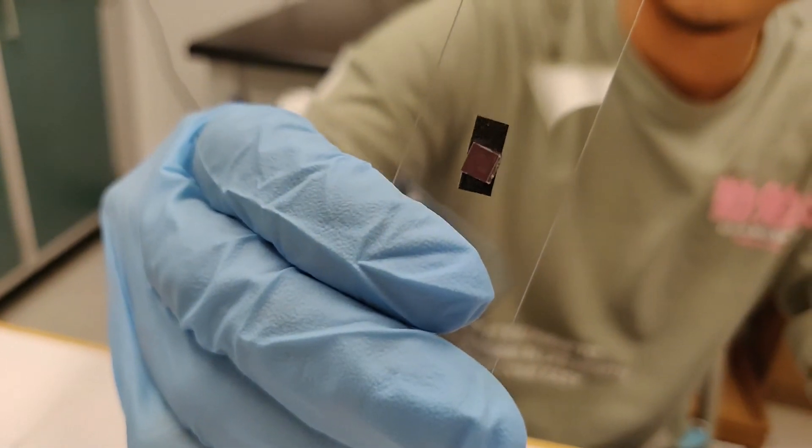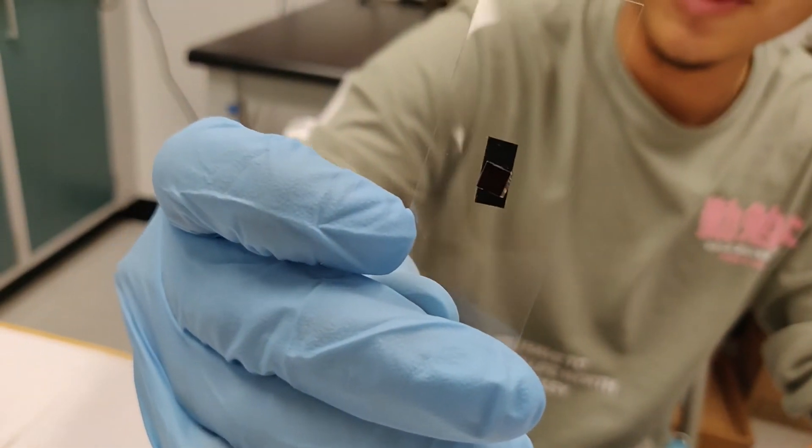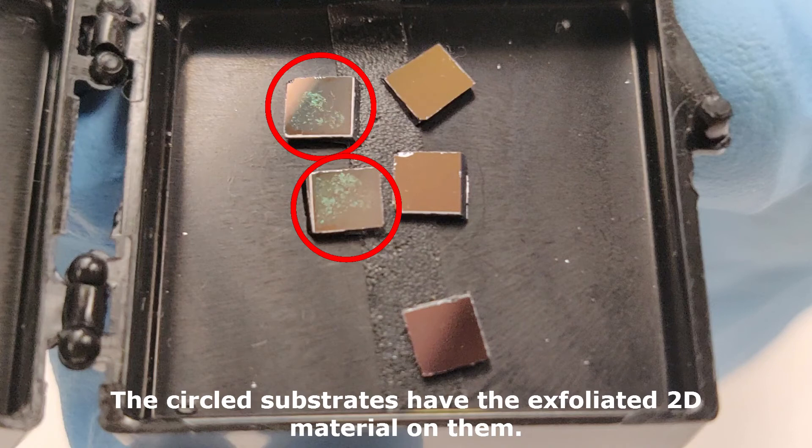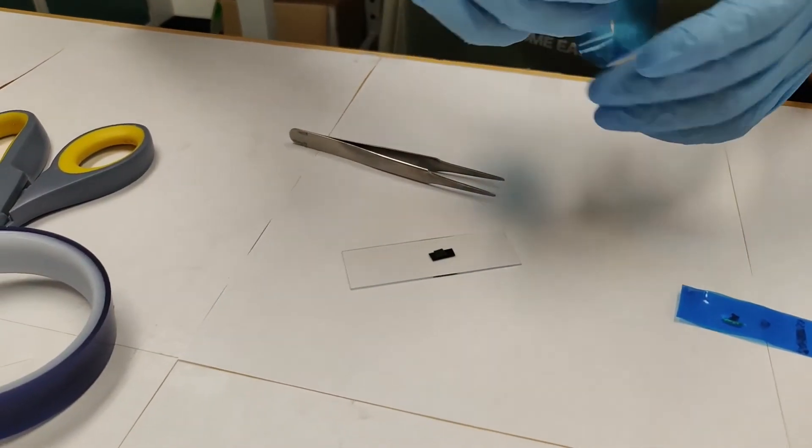Okay, so the 2D material is what's left behind on the substrate, right? Yeah, what's on the substrate right now is 2D materials. And that's the last step of the process.